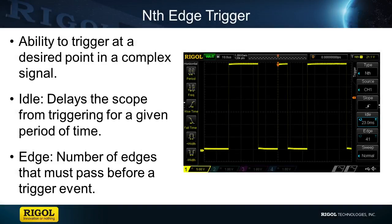NthEdge trigger allows for a more specific trigger event in a signal. It allows the user to set a time delay and then the number of edges to pass before the trigger occurs. This is a particularly useful capability when monitoring serial communication lines or rather complex signals.